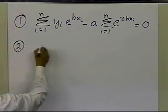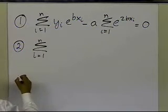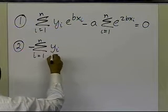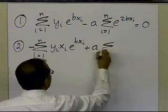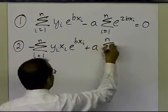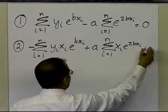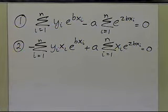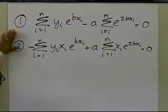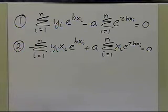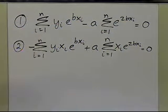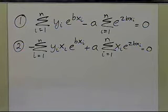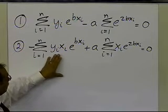The second equation becomes: summation i=1 to n of y_i·x_i·e^(b·x_i) plus a·summation i=1 to n of x_i·e^(2b·x_i) equals 0. So after simplification I have two equations. The key point is: I have two unknowns `a` and `b`, but these are two simultaneous nonlinear equations — not linear like in standard linear regression.